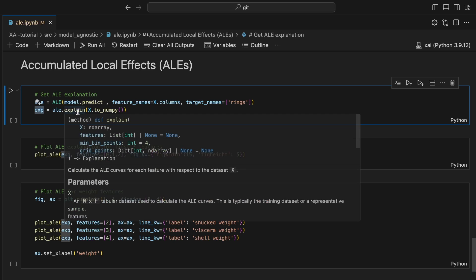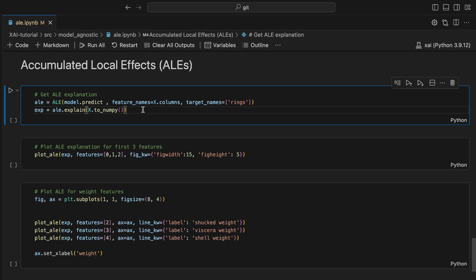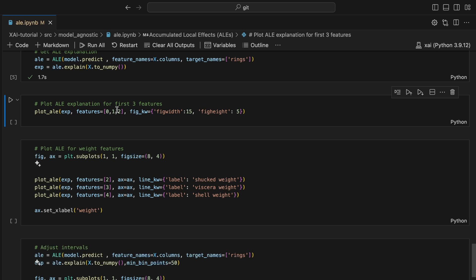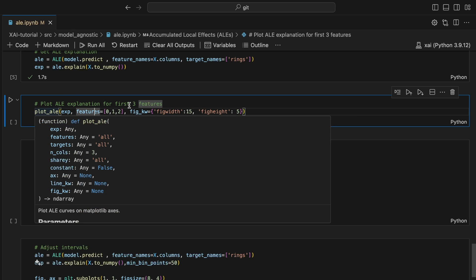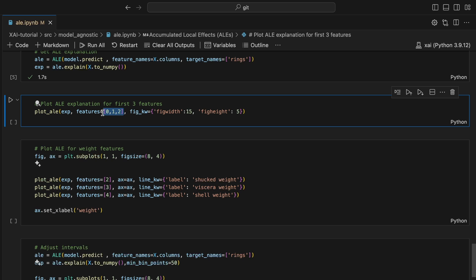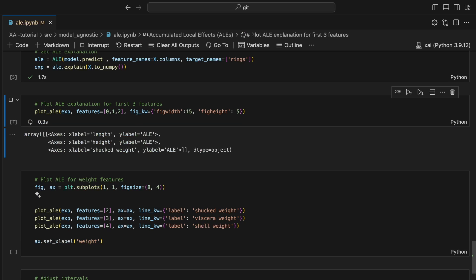To plot ALEs, we pass the explanations and the features we want to display to the plot ALE function. Using array positions of 0, 1, and 2 means we display the ALEs for the first three features.